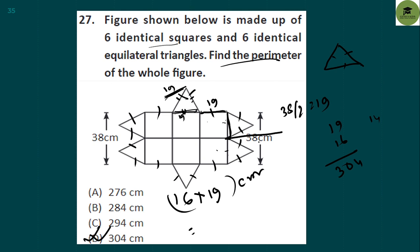To summarize: we divided 38 by 2 because both squares are identical, giving 19 cm per side. Since all triangles are equilateral and share that 19 cm side, all their sides are also 19 cm. The total number of outer sides is 16, so the perimeter is 16 into 19 equals 304 centimeters.